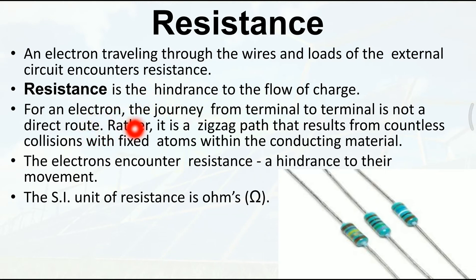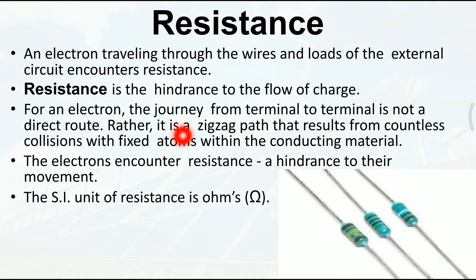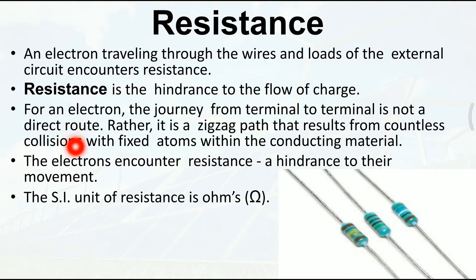For an electron, the journey from terminal to terminal is not a direct route. Positive terminal से negative terminal की journey direct route नहीं होती, मतलब सीधा flow नहीं होता। Rather, it is a zigzag path that results from countless collisions with fixed atoms within the conducting material. उस path में बहुत सारे collisions होते हैं, बहुत सारे resistance आते हैं, जिनकी वजह से कुछ electricity loss हो जाती है - that is resistance।